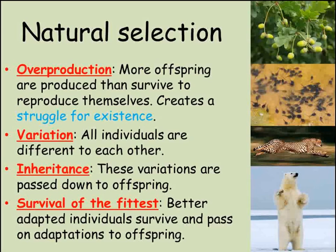Survival of the fittest, in other words. And because this variation is inherited, when those better adapted individuals did reproduce, their offspring would have the same beneficial adaptations. Therefore, more of the next generation would have that adaptation. Over time, the species would change or evolve. Individuals not well adapted would die off without reproducing, so that those traits would not be passed on.